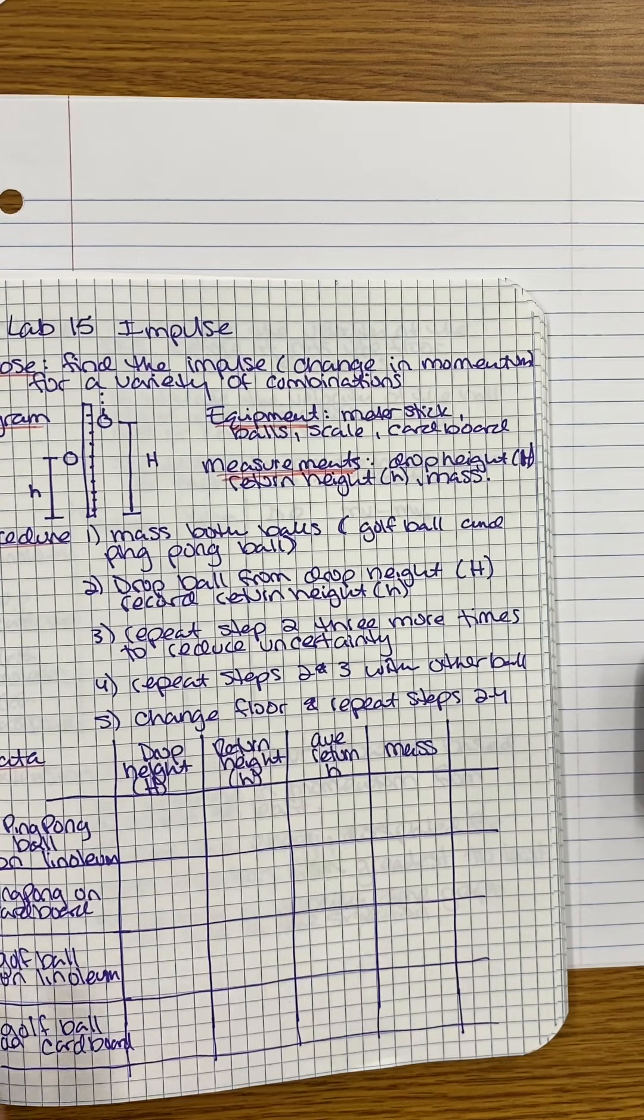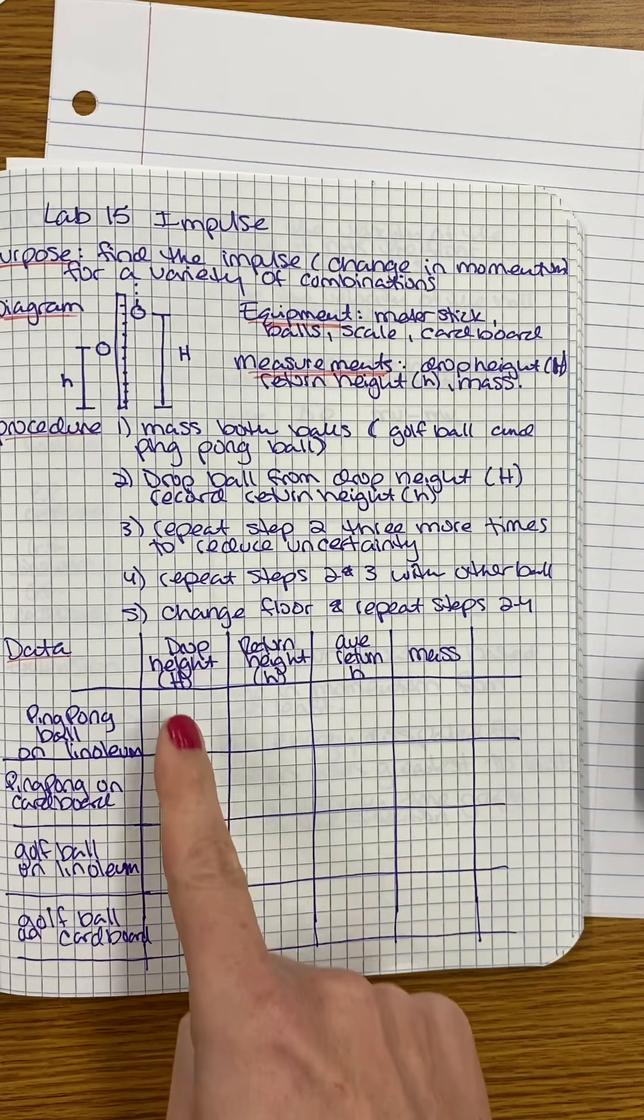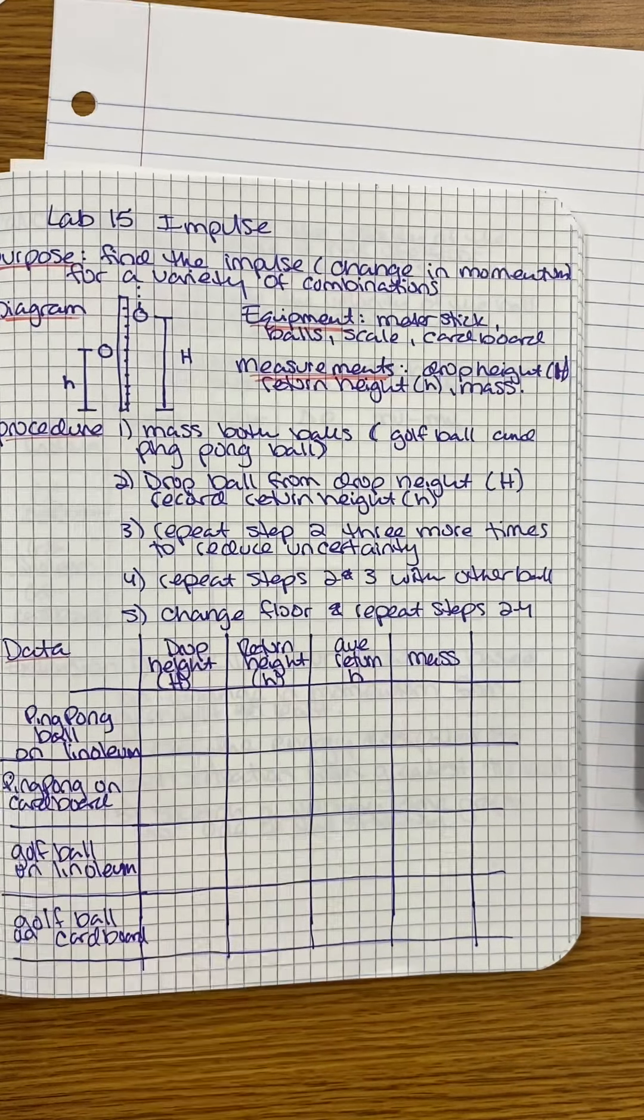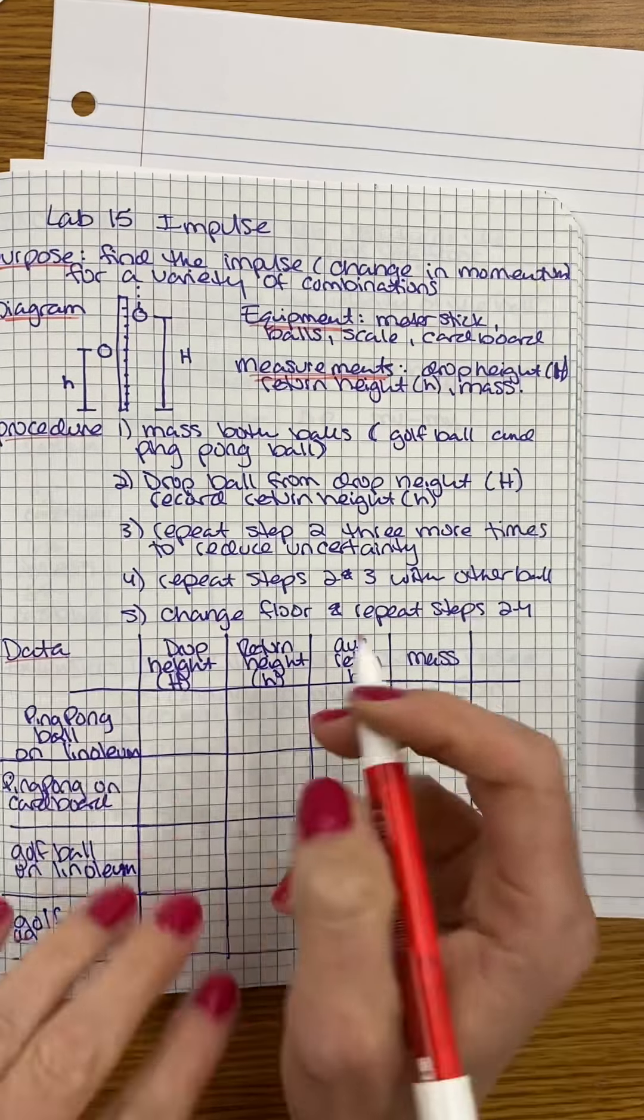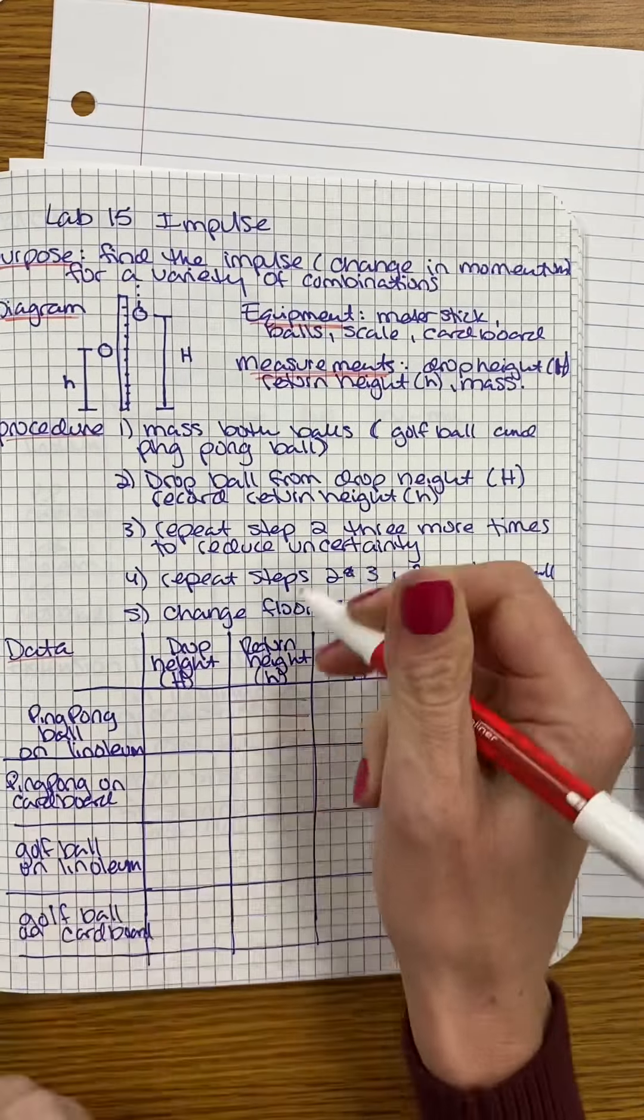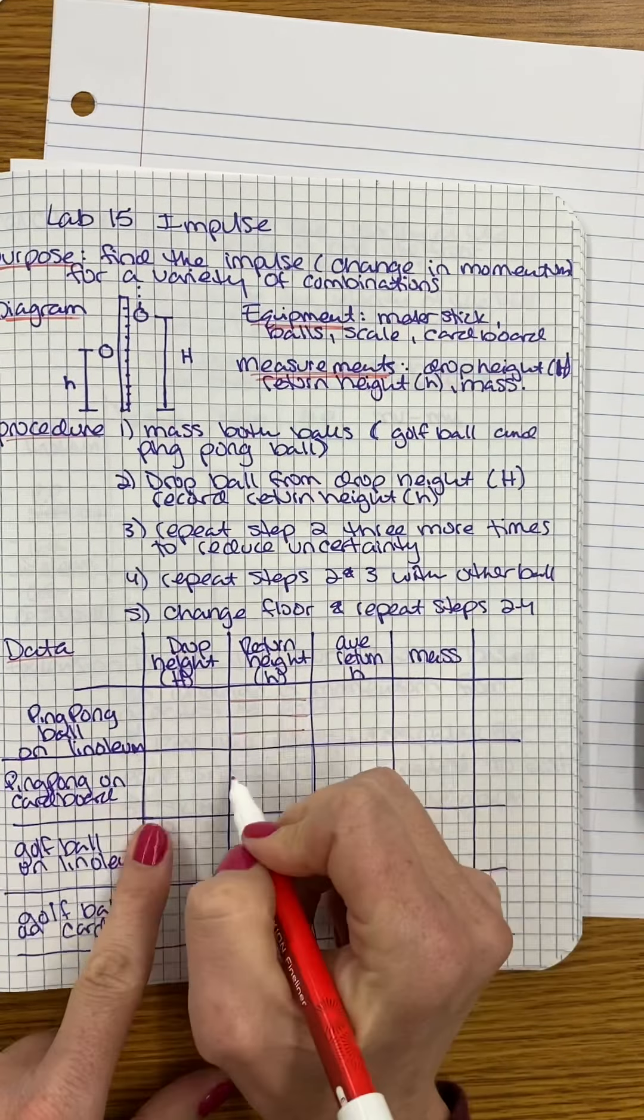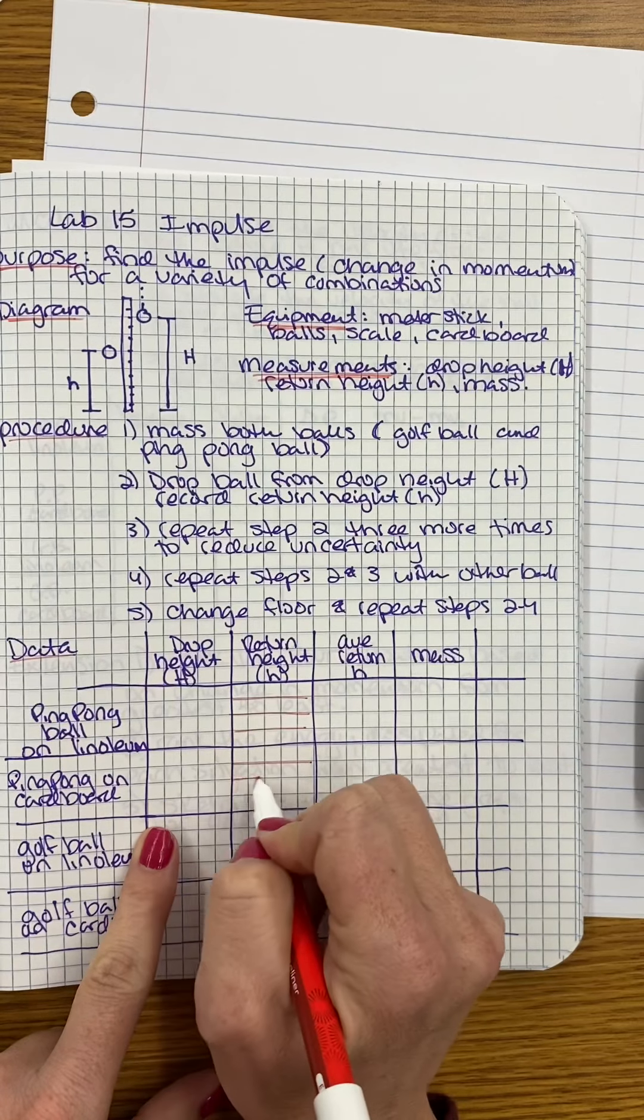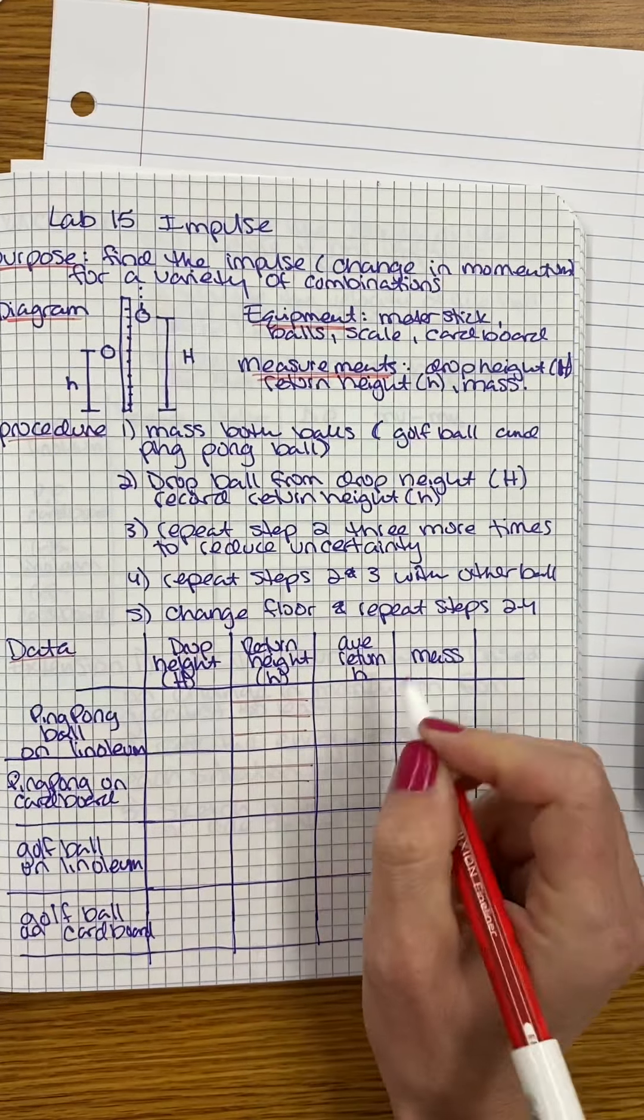My data, I put it in a table. So we have the four different scenarios. Our drop height should be the same for all of our different trials. And then our return height, we're going to have four different return heights and we'll take the average return height here. And then for our ping pong, we'll have our four different trials, our four different return heights, and our average we'll put here.